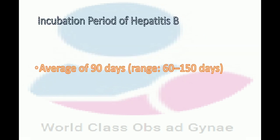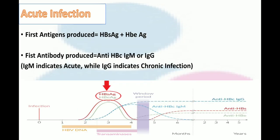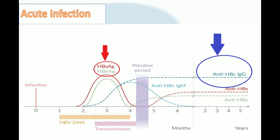The incubation period of hepatitis B is on average 90 days, ranging from 60 to 150 days. Now let us understand this graph. In acute infection, we have HBs antigen and HBe antigen. HBe shows that the patient has a very high rate of transmission. In acute infection, the first antigen produced is HBs antigen, then HBe antigen. The first antibody produced is anti-HBc — IgM or IgG. IgM indicates acute and IgG indicates chronic infection.